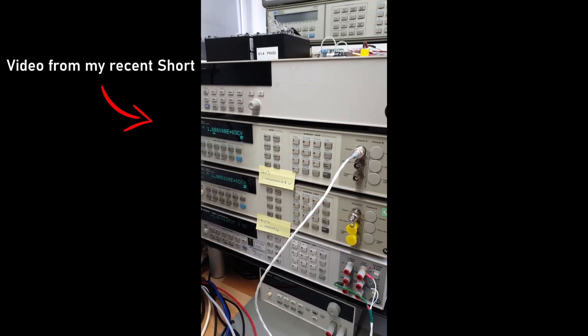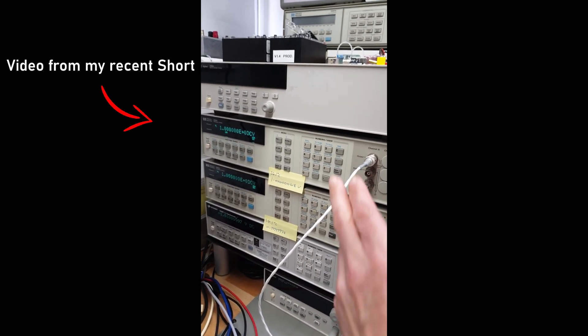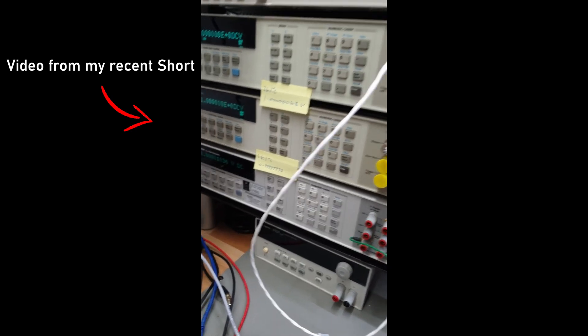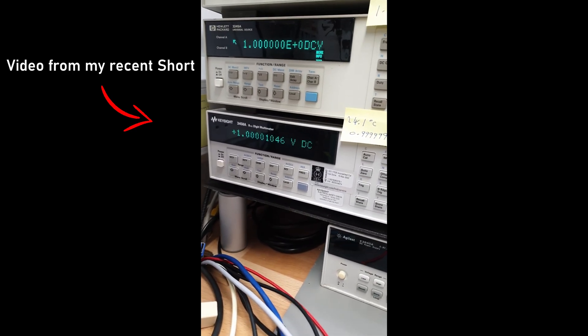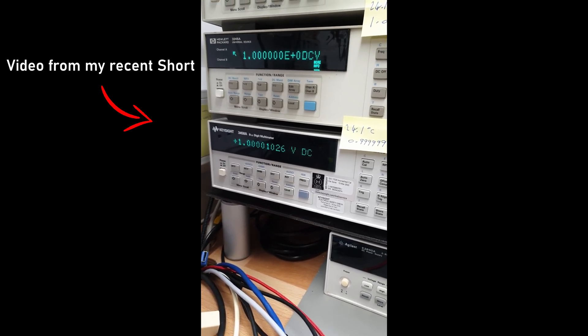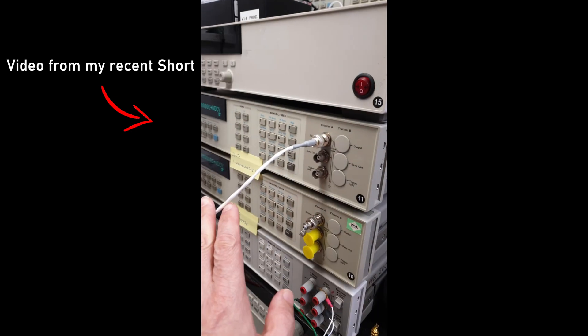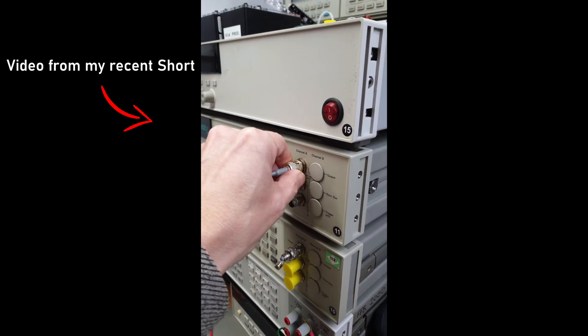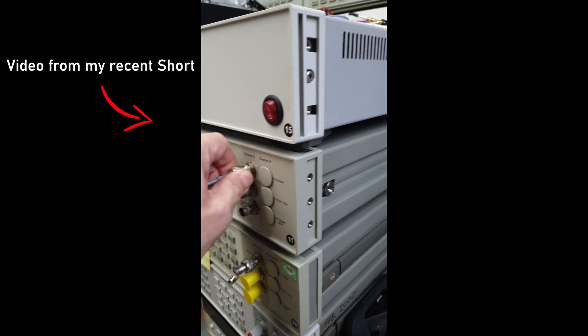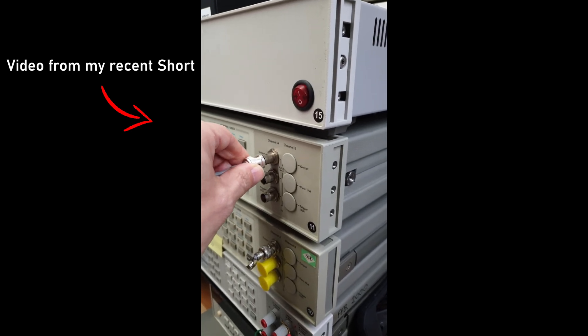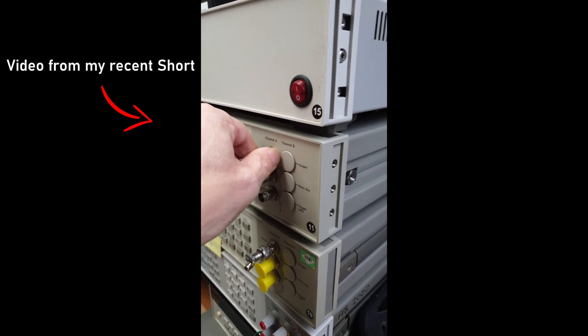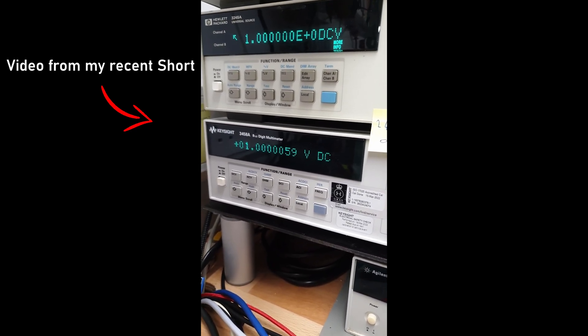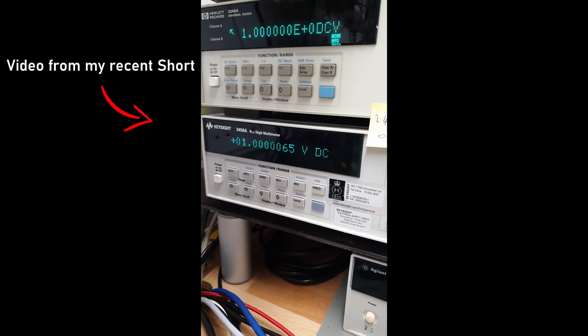This is why I hate BNCs in the metrology game. Here's my 3245A cabled up to my 3458A and you can see that the voltage is reading just about 10 microvolts over 1 volt. I've got quality connectors used here. So if I just unplug the BNC here, it's a silver plated BNC with a gold insert. If I just unplug it and plug it straight back in again and look at the voltage, it drops like a stone down to where it should be.